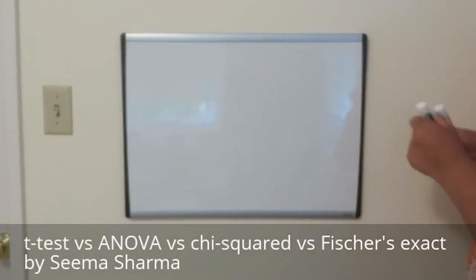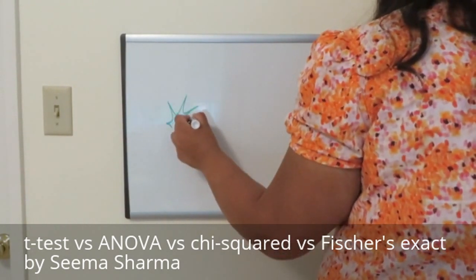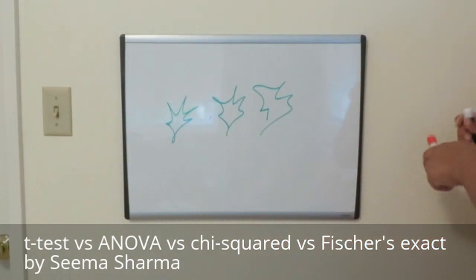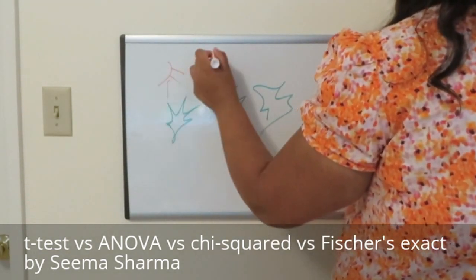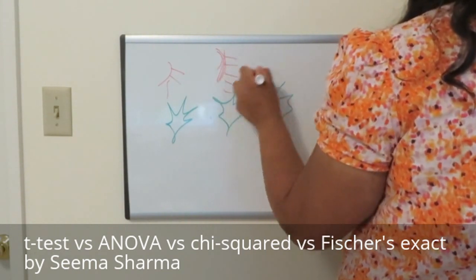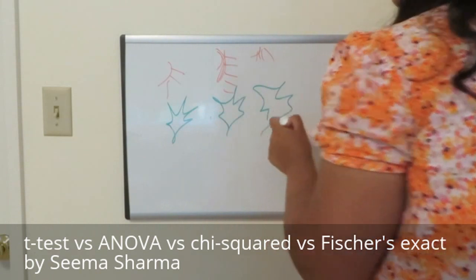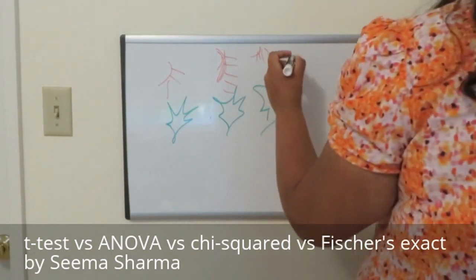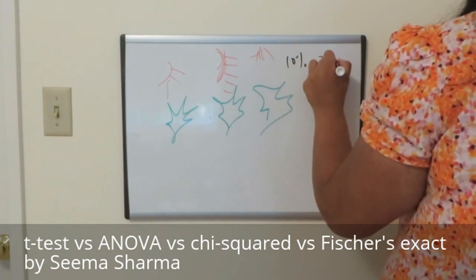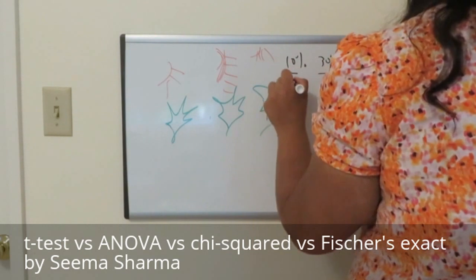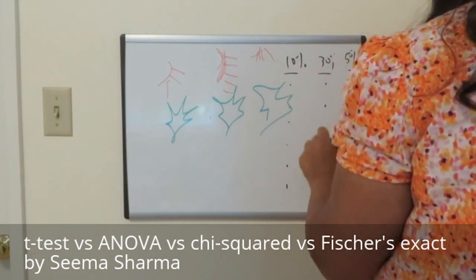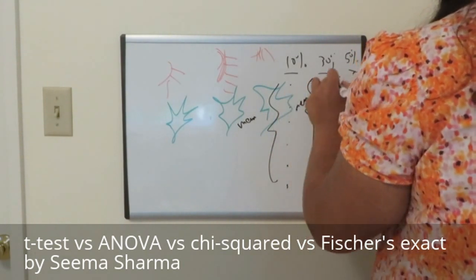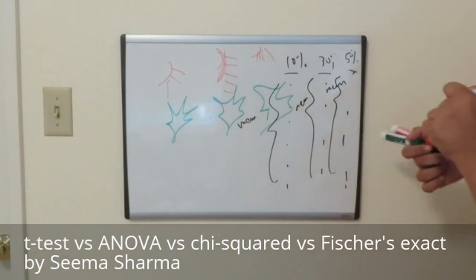What if you did a study of three different groups of leaves, all exposed to varying levels of sunlight? So three different groups of leaves with three varying levels of sunlight exposure — say 10%, 30%, and 50% sunlight exposure. You measure the sizes of each of the leaves in each group, then take the means of each group and compare them to each other.